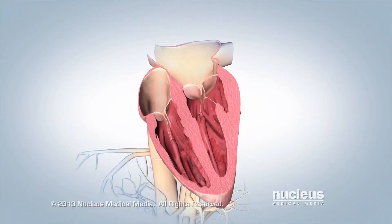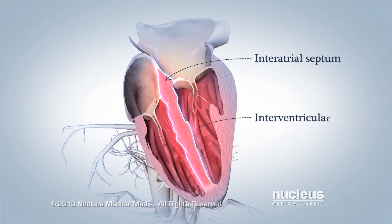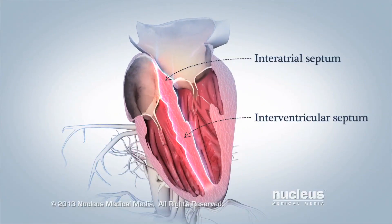Walls inside your heart, called the interatrial and interventricular septa, help keep the blood on left and right sides from mixing.